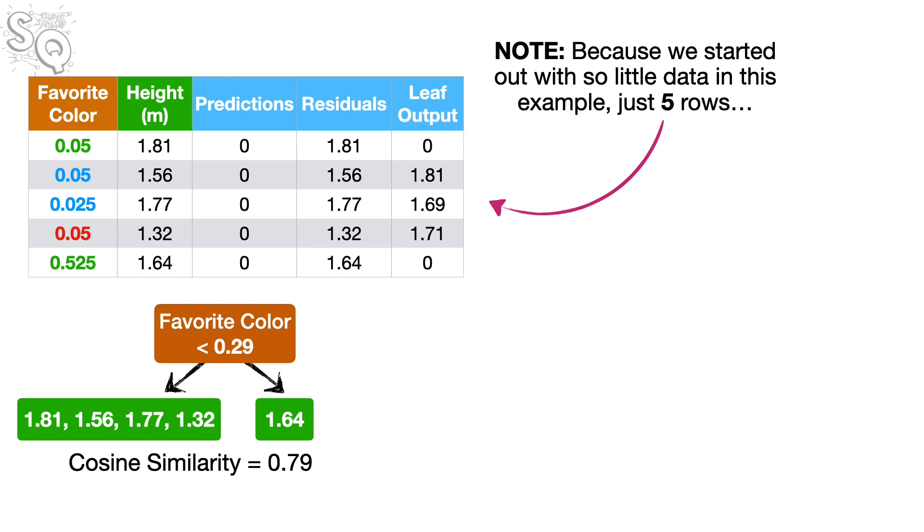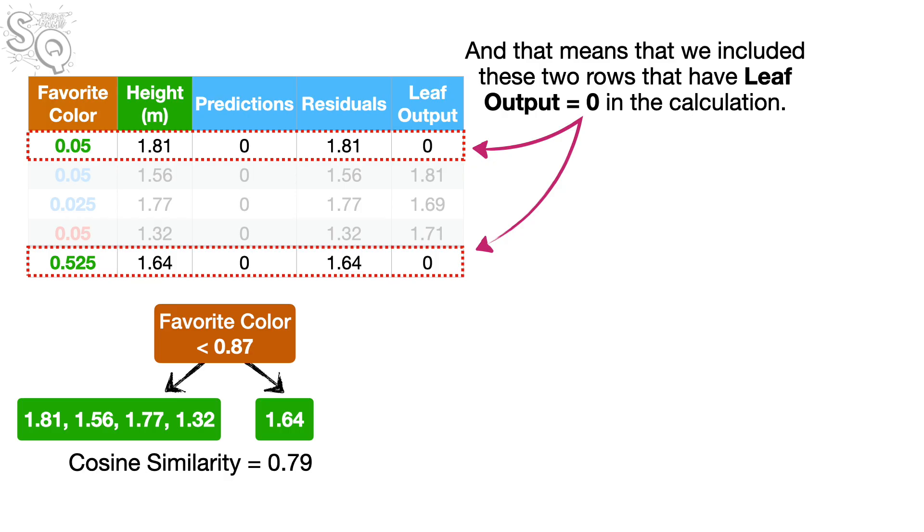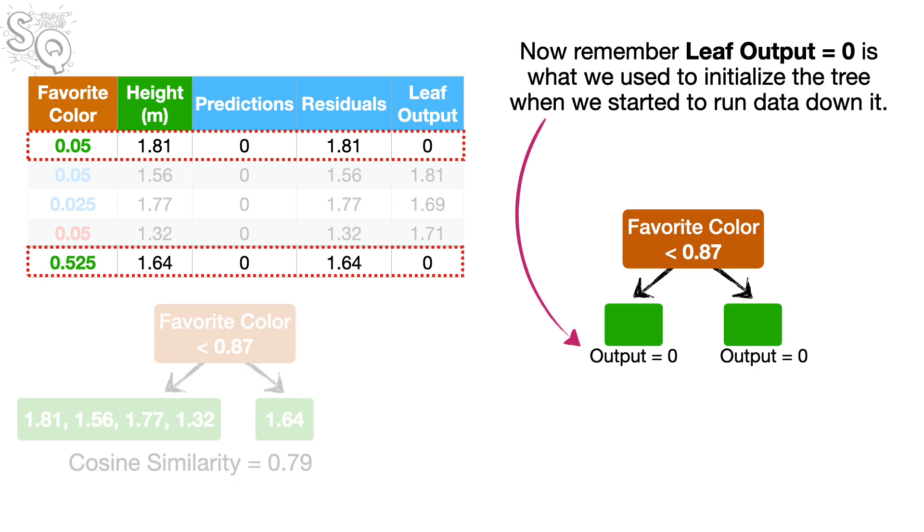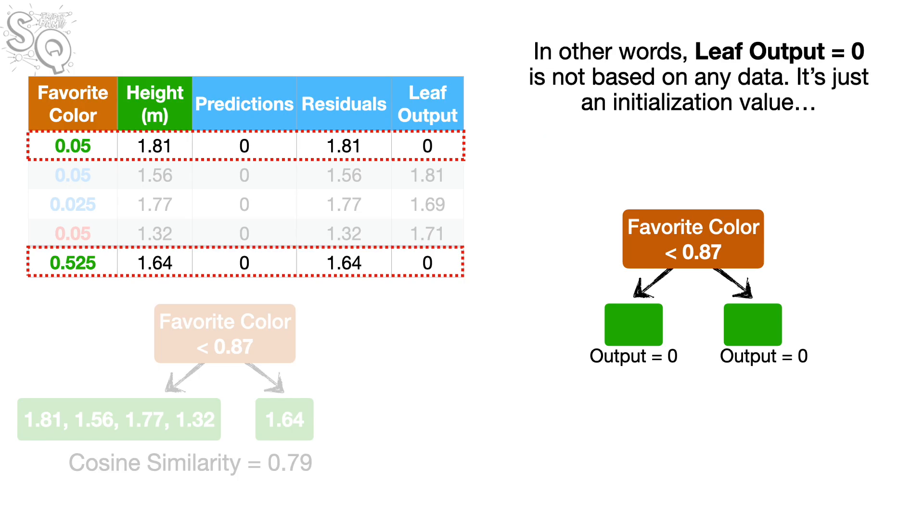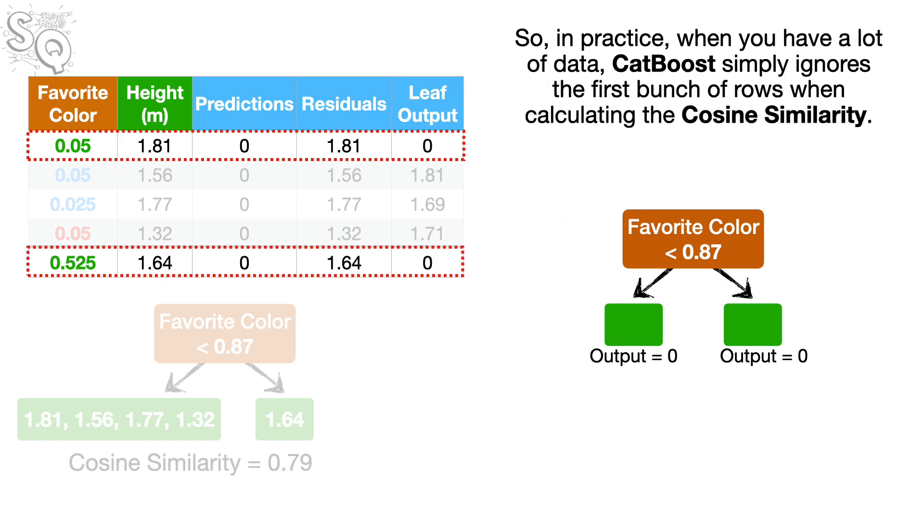Note, because we started out with so little data in this example, just five rows, we used all of it to calculate the cosine similarity. And that means that we included these two rows that have leaf output equal to 0 in the calculation. Now, remember, leaf output equals 0 is what we used to initialize the tree when we started to run data down it. In other words, leaf output equals 0 is not based on any data, it's just an initialization value. And it doesn't make a whole lot of sense to include leaf output values that are not based on data in the cosine similarity calculation. So, in practice, when you have a lot of data, CatBoost simply ignores the first bunch of rows when calculating the cosine similarity.